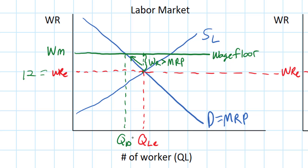What happens to the quantity supplied? If the wage rate rises, more workers will want to be employed in this industry. If this is the fast food market, more households will seek employment there now that the wage has risen from $12 to $16 per hour — it's simply a more desirable market to be employed in. So the quantity supplied increases, becoming greater than the quantity demanded. As you've learned with price controls, a price floor creates a surplus — in this case in the labor market, we call this unemployment.